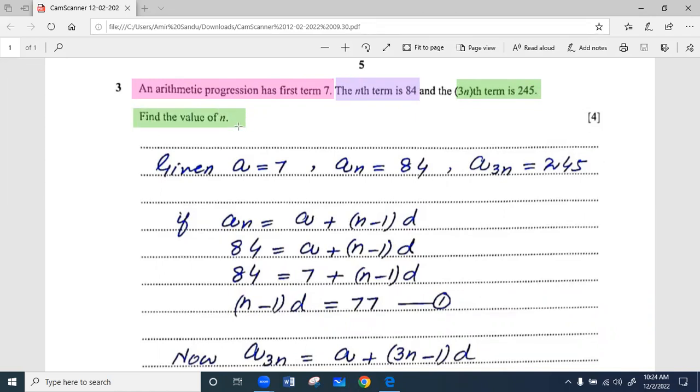So this is our information. First term a equals 7, nth term a_n equals 84, and 3nth term a_3n equals 245.